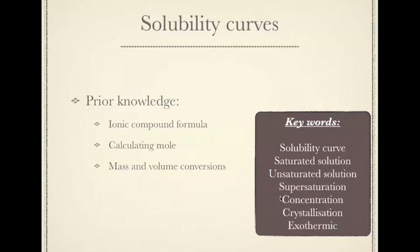A key word you're going to learn throughout this lesson is solubility curves. We're going to learn what they actually are. We're going to learn five different types of solutions: saturated, unsaturated, supersaturated, concentrated, and dilute. We'll also use the words crystallization or recrystallization, and understand what an exothermic reaction is. These are the key words you'll need to use in sentences after finishing this video.